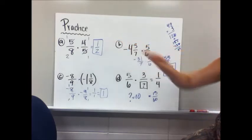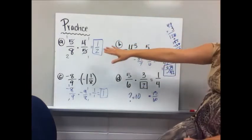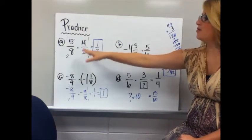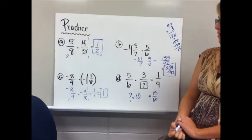Okay, practice A. You can see where I cross-simplified, and then when I multiply across, I get one-half. The fives go down to ones, the four and the eight break down by fours to be one and two, multiply across, one-half.